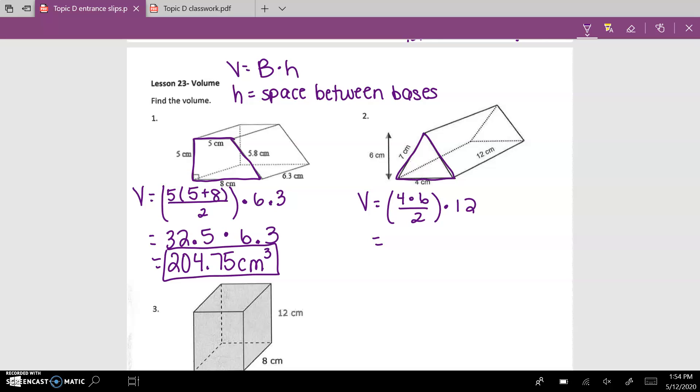When I simplify this first part down, I would end up with 12, so 12 times 12 would give us 144 centimeters cubed, since we are talking about volume.